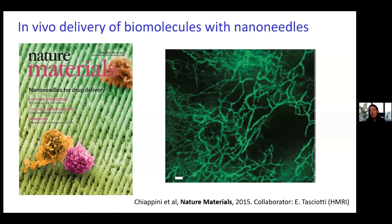We've used this to deliver many different things over time — many different types of molecules, small cargo, larger cargo. From our first paper, we delivered VEGF165 plasmid DNA to muscle, and you can see some of the new blood vessels that formed a couple of weeks after delivering that vascular endothelial growth factor-encoding plasmid. That was really just a demonstration that this sort of platform could be useful in vivo.